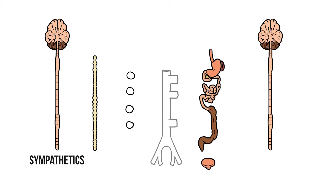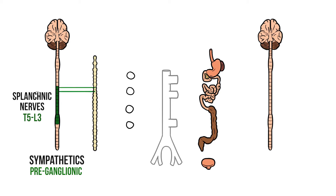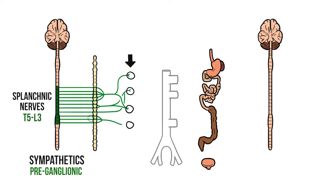First let's add the sympathetic nerves. These nerves are found on both sides of the body, but I'll only be drawing them on one side to keep our illustration a bit clearer. Sympathetic fibres travel into the abdomen via the thoracic and lumbar splanchnic nerves. The splanchnics start as pre-ganglionic fibres that leave the spinal cord between T5 and L3. From here they travel straight through the sympathetic chain without synapsing, before coming together and forming four splanchnic nerves. These redistribute themselves and synapse at a series of collateral ganglia, which then send post-ganglionic fibres towards the organs.